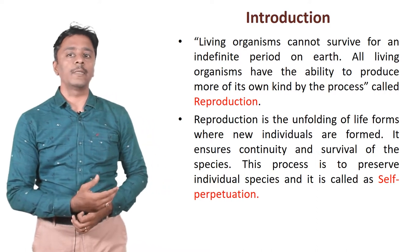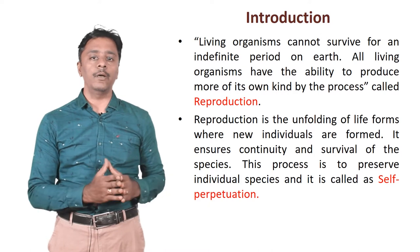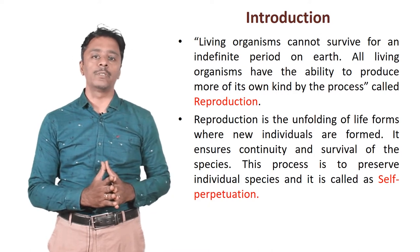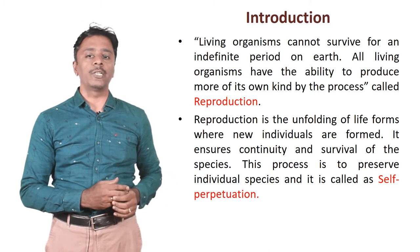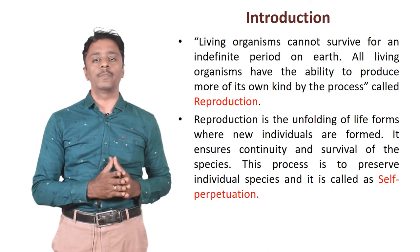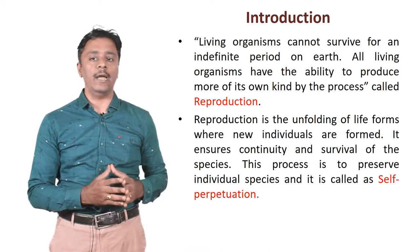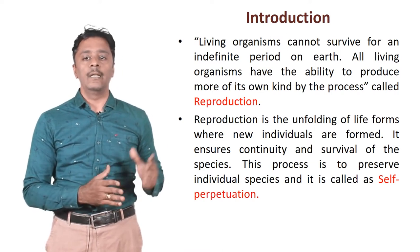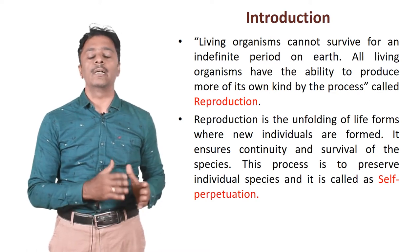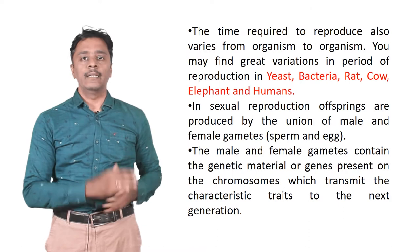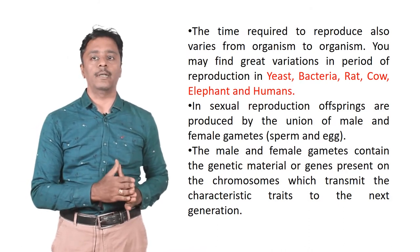Introduction. Living organisms cannot survive for an indefinite period on earth. All living organisms have the ability to produce more of its kind by the process called reproduction. Reproduction is the unfolding of life forms where new individuals are formed. It ensures continuity and survival of the species. This process is to preserve individual species and it is called as self-perpetuation.